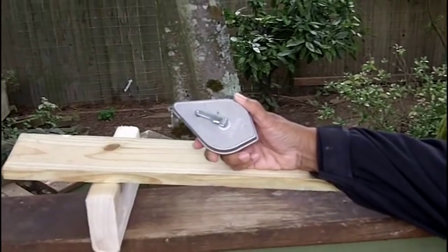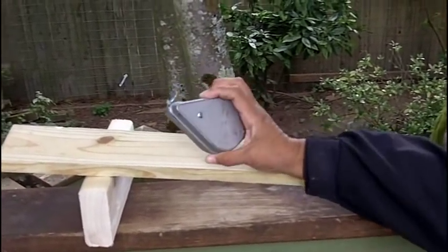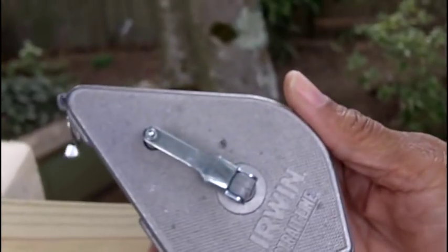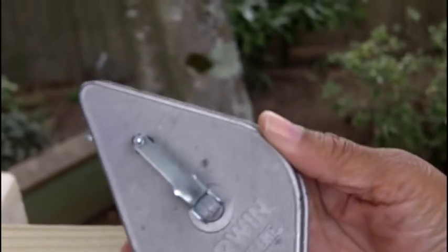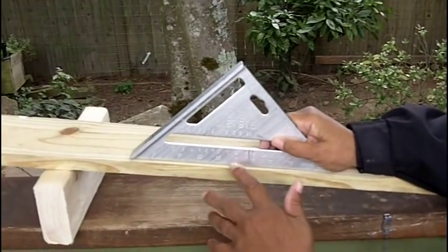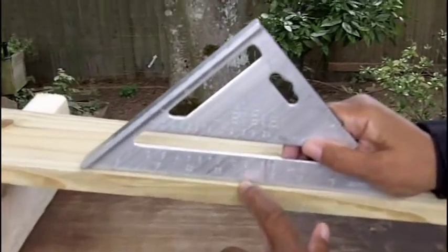Next, you're going to need a plumb bob. Now this is one of those tools that have more than one use. What this is is it's a chalk box. So I'm going to use my chalk box as my plumb bob. Now I've got my speed square set up.